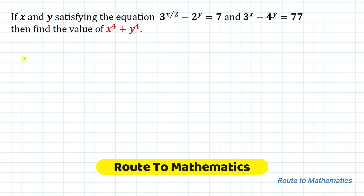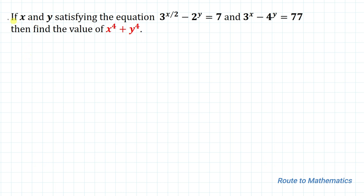Hello everyone, welcome to Root 2 Mathematics. In this video we are going to solve an interesting exponential equation. The given question is: if x and y satisfy 3^(x/2) − 2^y = 7 and 3^x − 4^y = 77, find the value of x⁴ + y⁴. We are going to solve this problem in two ways.